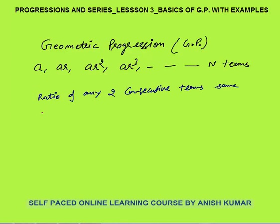You can see that T2 upon T1 — these are consecutive terms, term number 1 and 2. This is the first term T1, this is the second term T2, this is the third term, this is the fourth term, and so on. The ratio of any two consecutive terms is the same. If you divide AR by A you will get R, and even if you divide T4 by T3 you will get R — AR³ by AR² gives R. So the ratio of any two consecutive terms is the same, and that progression is called a geometric progression.